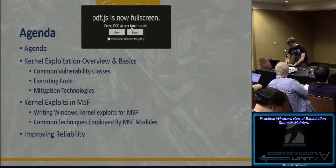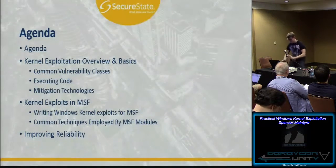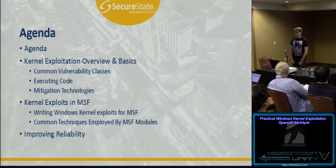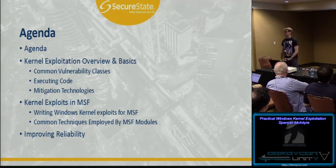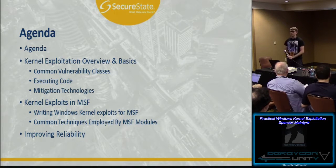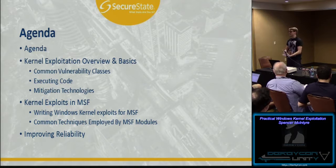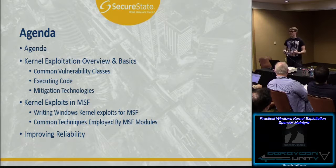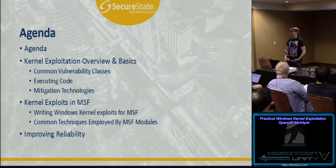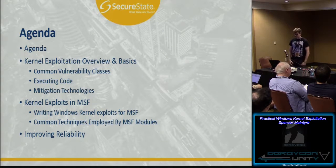I was hoping only I could see that. Alright, so this is the agenda. We're going to real quick go over kernel exploitation basics. We're going to cover some of the common vulnerability classes — the types of things that we see. And then we're going to dive into what those classes mean to us when it comes to things like reliability and the types of tricks that we can use.